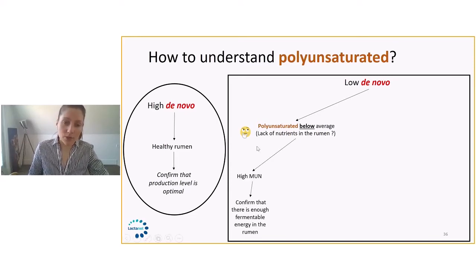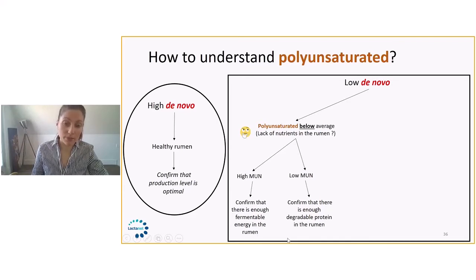When we lack nutrients, we look at MUN. MUN is a data that we're kind of used to looking at. When we have high MUNs, our hypothesis is that maybe we are lacking fermentable energy in the rumen. If MUNs is high and we are into this scenario here, we might try to add a little bit of ground corn or some source of energy that will feed rumen bugs to see if we can optimize de novo production. When MUNs is low, our other hypothesis is that maybe we are lacking degradable protein. The rumen bugs need both protein and energy to optimize fermentation in the rumen.